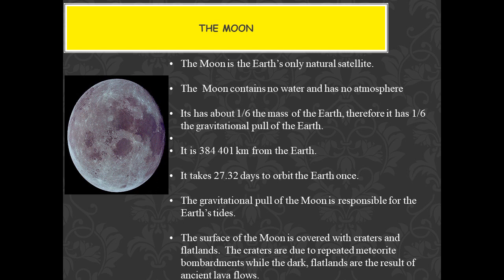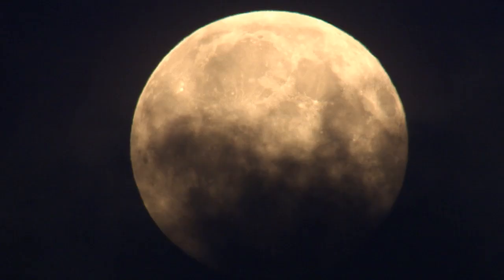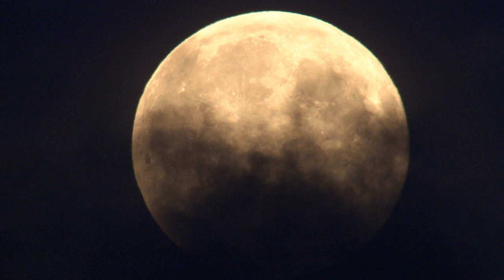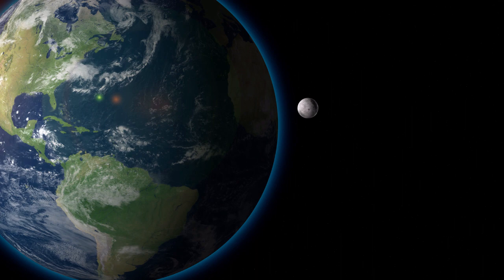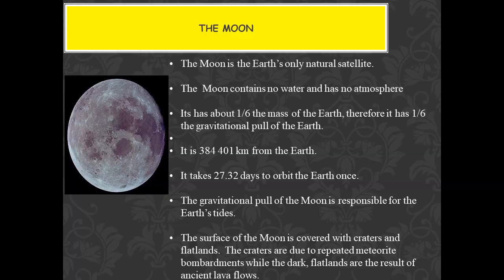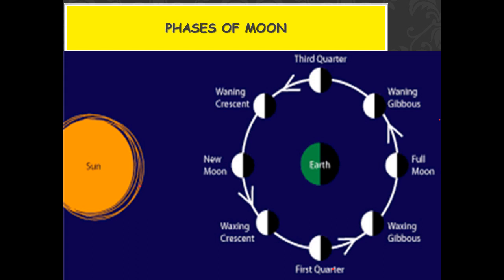Now we will talk about some facts about the moon. The moon is Earth's natural satellite. The moon has no water and no atmosphere. The moon's gravity is one-sixth of Earth's gravity. It takes approximately 28 days to complete one revolution around the Earth.